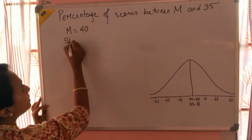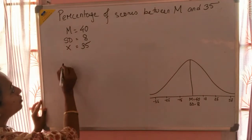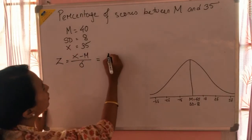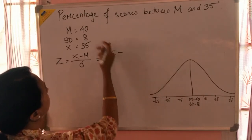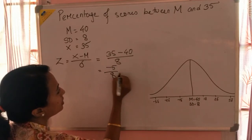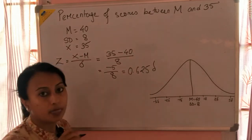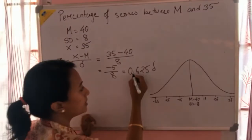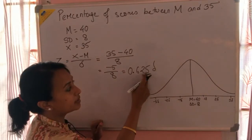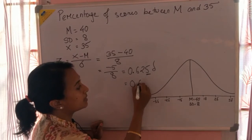For that, the data given to us: mean is 40, SD is 8, and the X score is 35. We put our values into the Z-score formula: X minus M divided by standard deviation. So it becomes 35 minus 40, which is minus 5, divided by 8, giving 0.625 standard deviation. We need two digits after the decimal, and since the third digit is 5 or more, we round up.